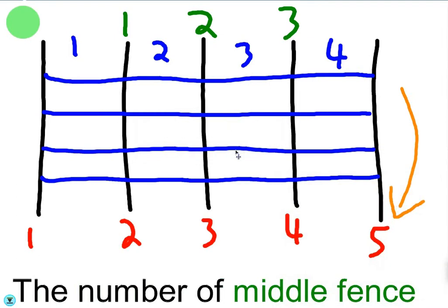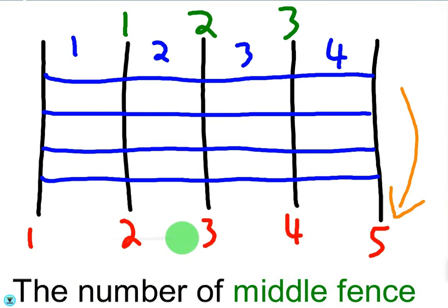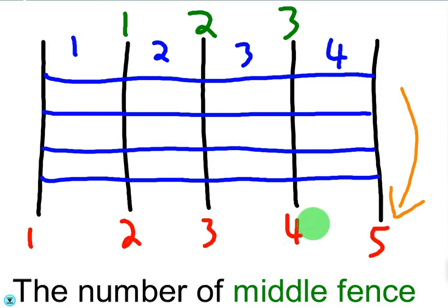Last time we talked about what it means to find the difference between two integers. We used this illustration of a fence with end posts, and then posts between, and then number of fence sections. So first of all we have in this illustration five fence posts. And we found out that the difference between two integers is just the number of sections between the fence posts. For example, the difference between five and one is four, which is how many sections of fence there are.